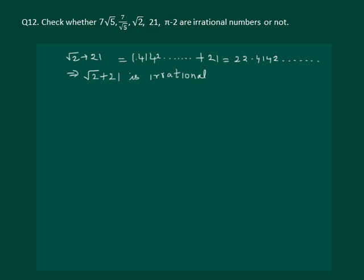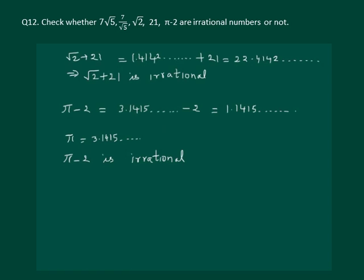Now the last part of the question is to check whether pi minus 2 is irrational or not. We know that the value of pi is 3.1415 and so on. So substituting we will get 3.1415 non-terminating, minus 2, which will be equal to 1.1415 and so on. Hence we can say that pi minus 2 is irrational.